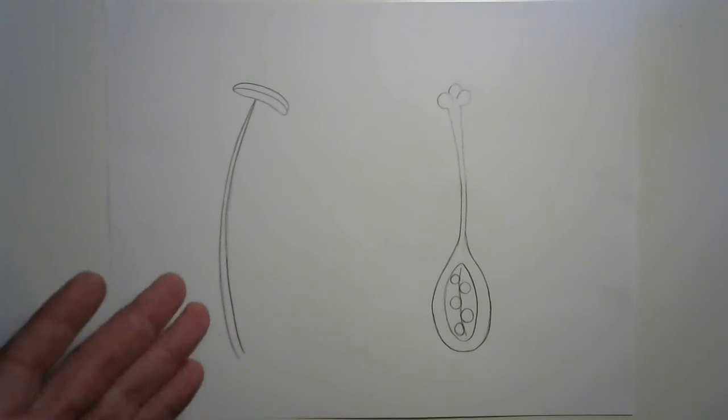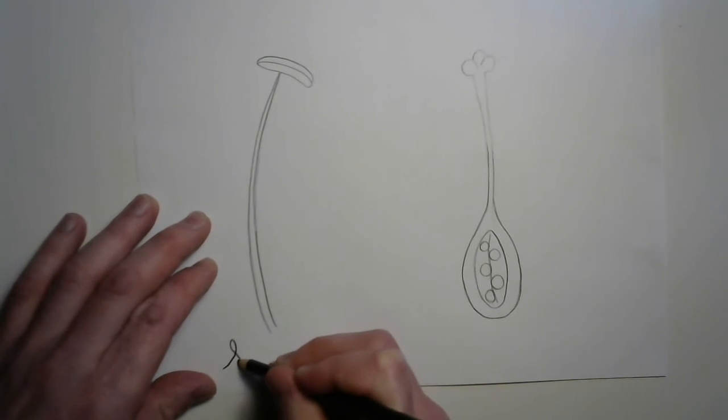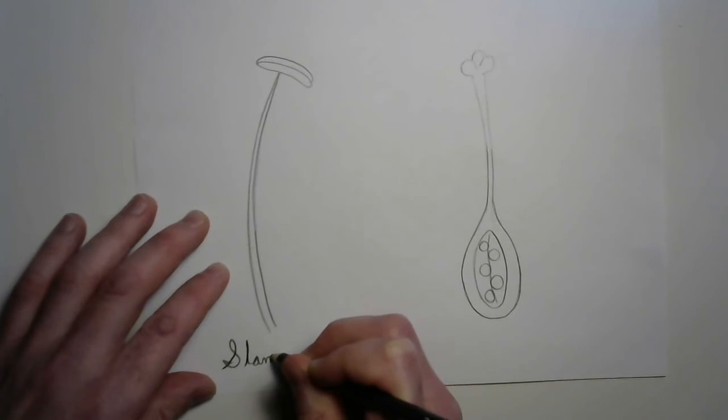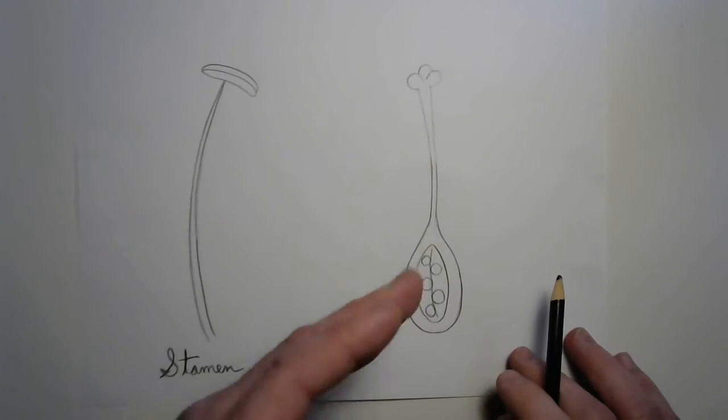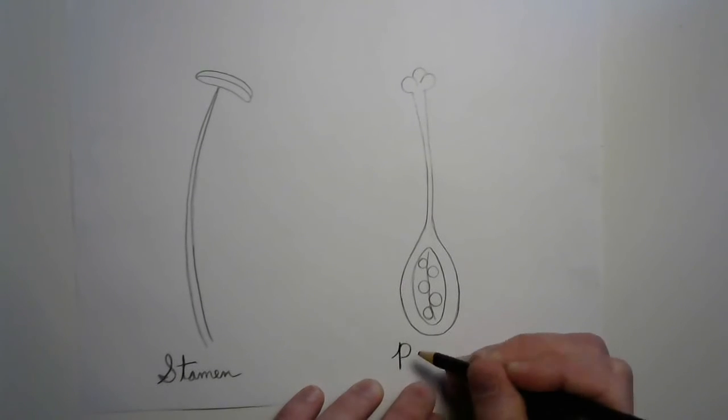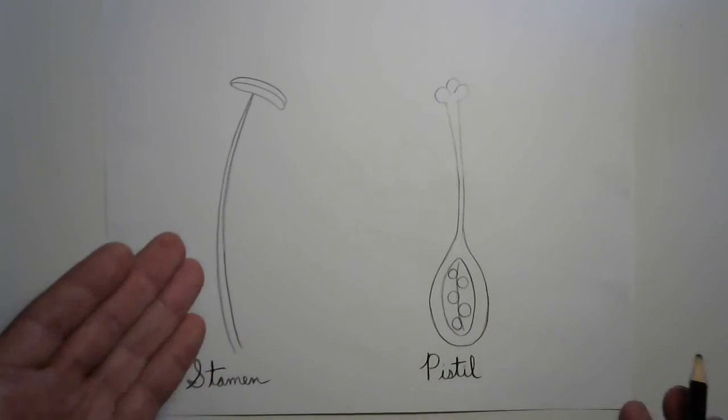So yeah, the stamen is right over here, and you may even remember it from when you did the parts of a flower. And they come in all shapes and sizes. Well, that would make this the female part of the flower, the pistil. Go ahead and label those two, and then let's talk about some of the other parts.